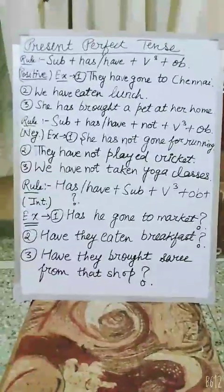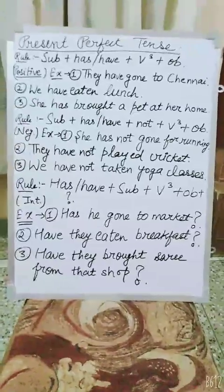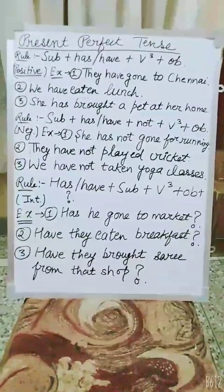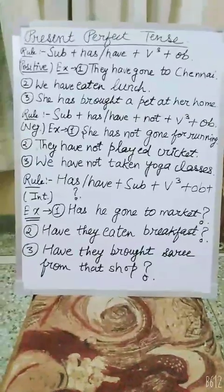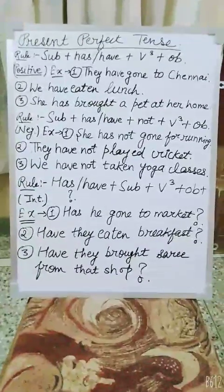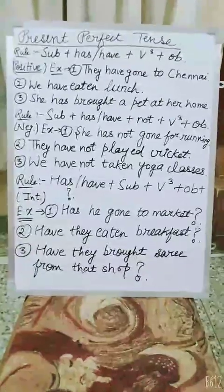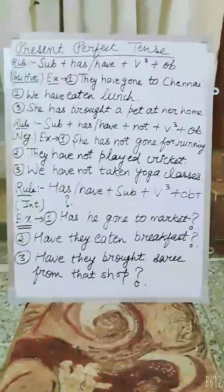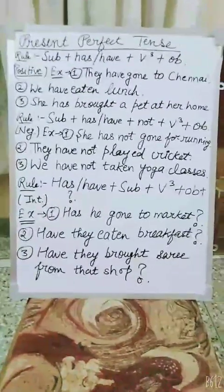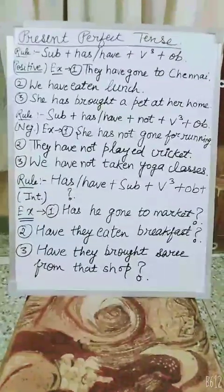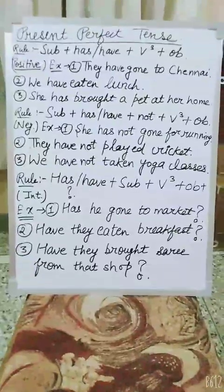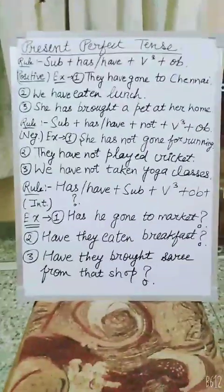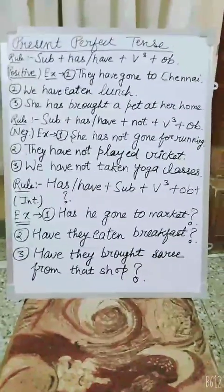Now let's look at the third sentence: 'She has brought a pet to her home' — meaning 'woh apne ghar par ek pet la chuki hai.' 'She' is the subject, and since she is singular, we use 'has' as the helping verb. 'Brought' is the verb's third form, and 'a pet at her home' stands as the object.